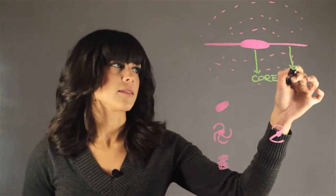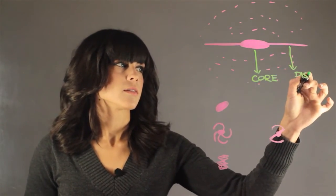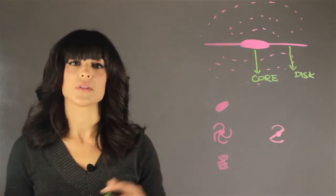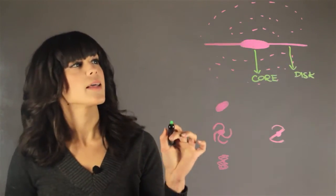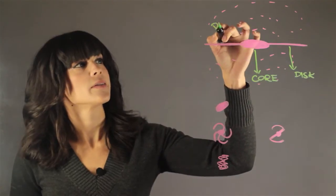And then we have the disk, which extends out with all the stars. And then we have something called the halo. The halo is made out of dark matter.